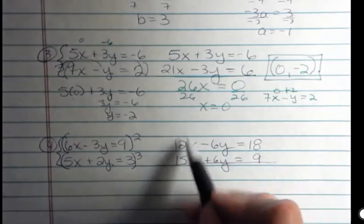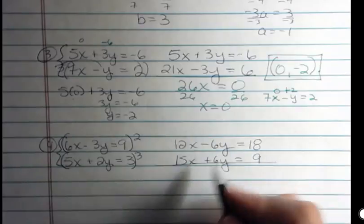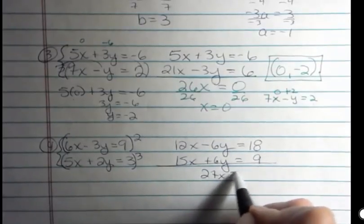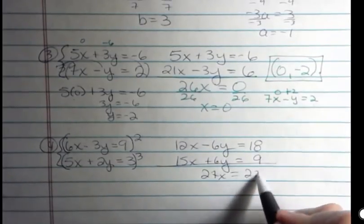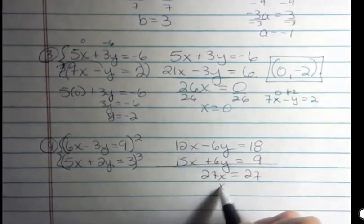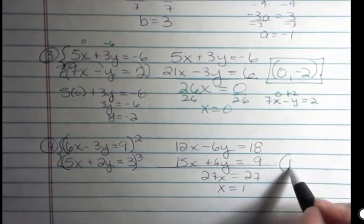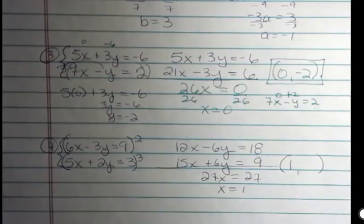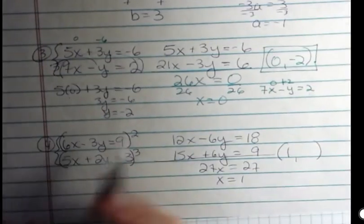Add those together and you get 27x equals, and the y's go away, equals 27. And divide both sides by 27 and x is 1. And that is half of your answer. The other half you're going to have to go find.